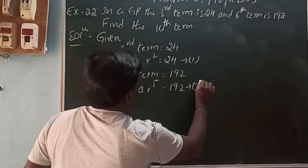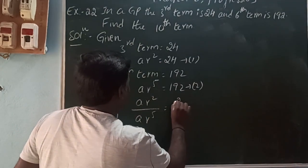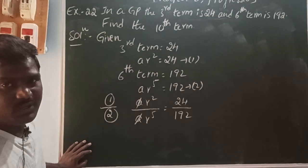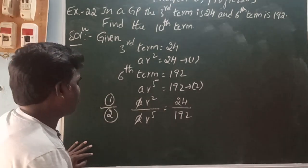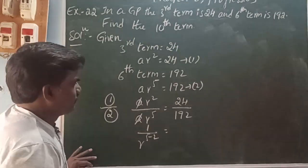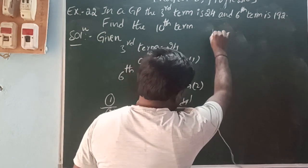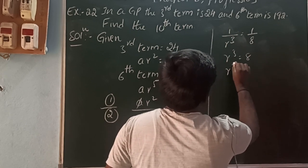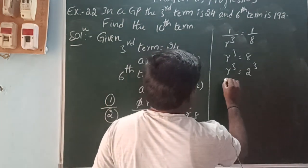Call these equation 1 and equation 2. Dividing equation 1 by equation 2: (a·r²) / (a·r^5) = 24/192. The a's cancel. Using a^m / a^n = 1/a^(n-m) when n > m: 1/r^(5-2) = 1/8. So 1/r³ = 1/8, meaning r³ = 8 = 2³. Since bases are equal, powers are equal, so r = 2.